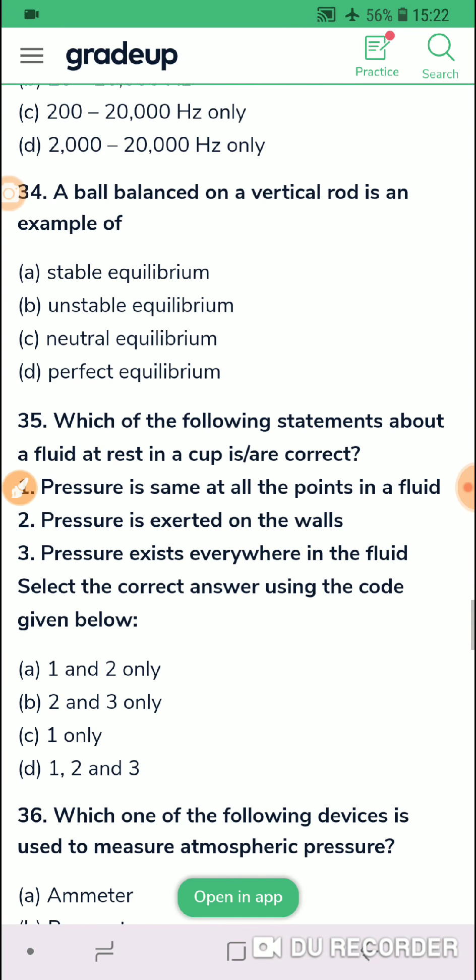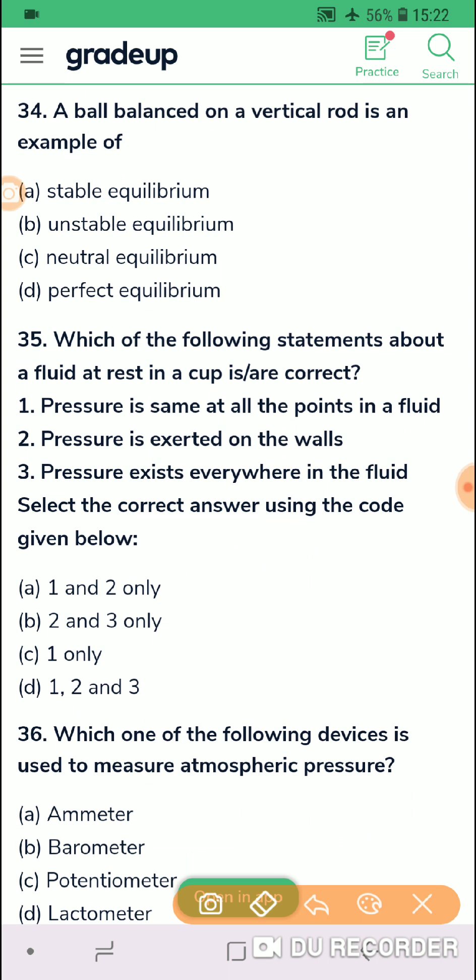Then question 34, a ball balanced on a vertical rod is an example of. A ball is likely to fall down, it is there, it is not falling down, but a slight push, a slight disturbance will make it fall down. It is unstable equilibrium.